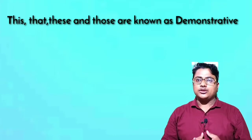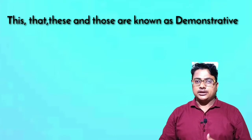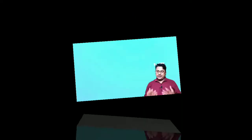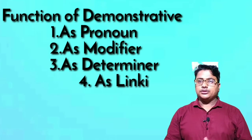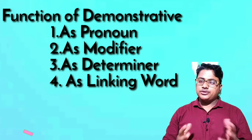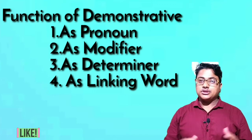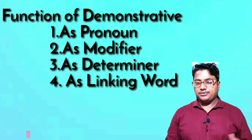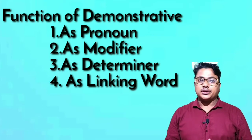We know that this, that, these, and those are known as demonstratives — a kind of pronoun. Now let's talk about the different uses. These four words are sometimes used as a pronoun, sometimes as a modifier, sometimes as a determiner, and sometimes as a linking word.